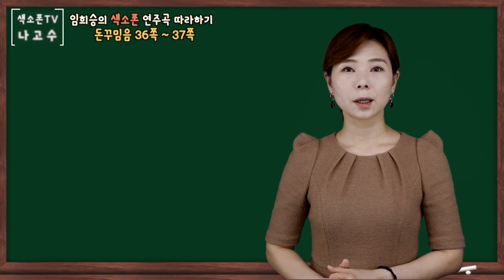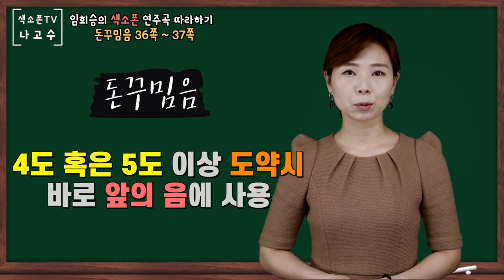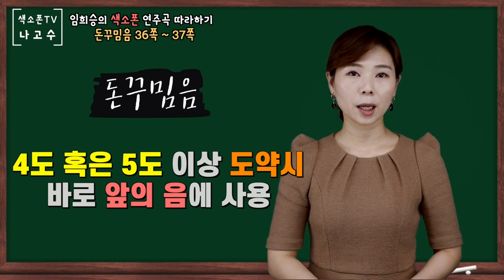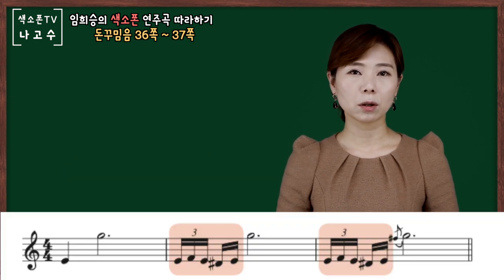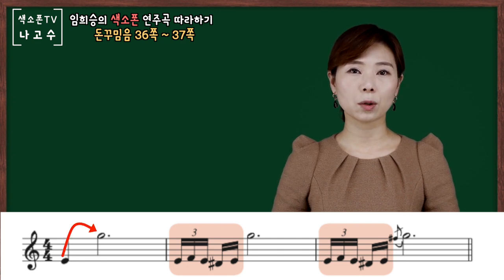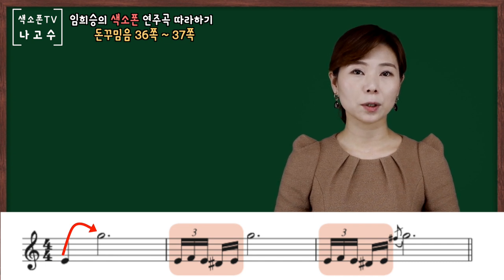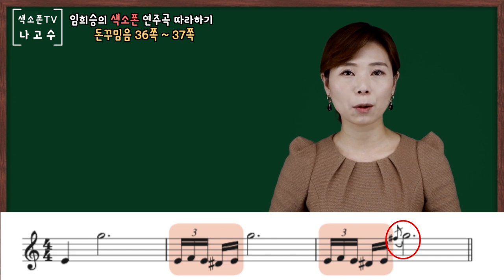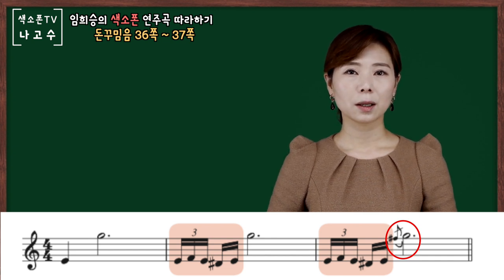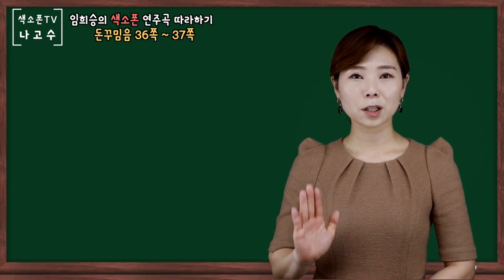돈 꾸밈음은 음이 도약될 때 주로 사용이 되는데요. 4도나 5도 이상 도약될 때 앞의 음에 돈 꾸밈음을 사용합니다. 본 교재에서는 저음 미에서 2옥타브 솔로 도약이 될 때 저음 미에 돈 꾸밈음을 사용하고 있으며 솔의 반음 짧은 앞 꾸밈음을 사용하여서 자연스럽게 연결하는 예시를 보여주고 있습니다.